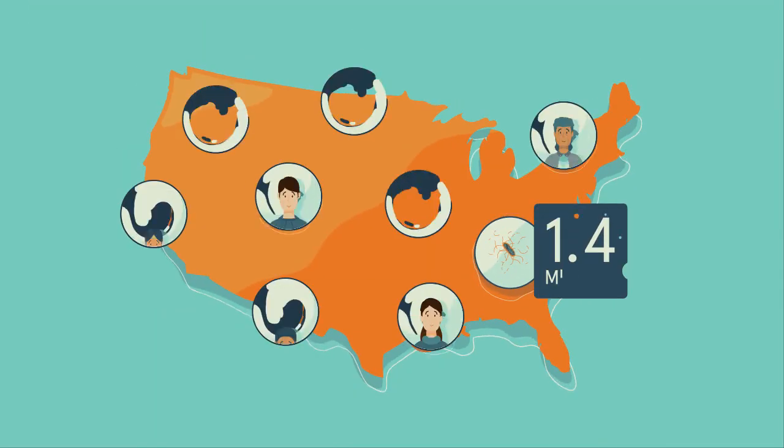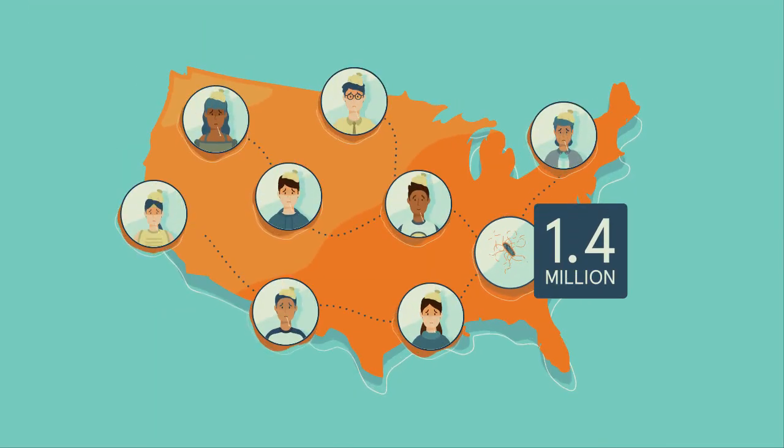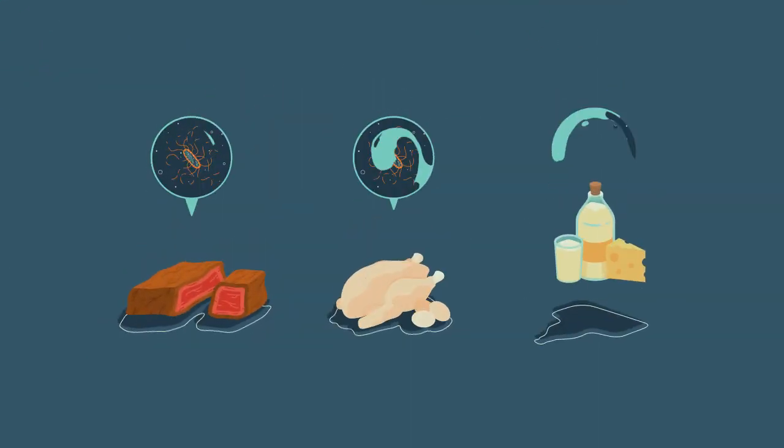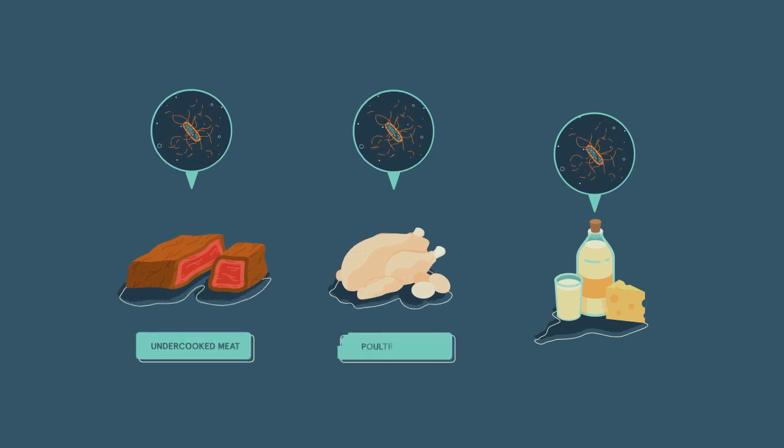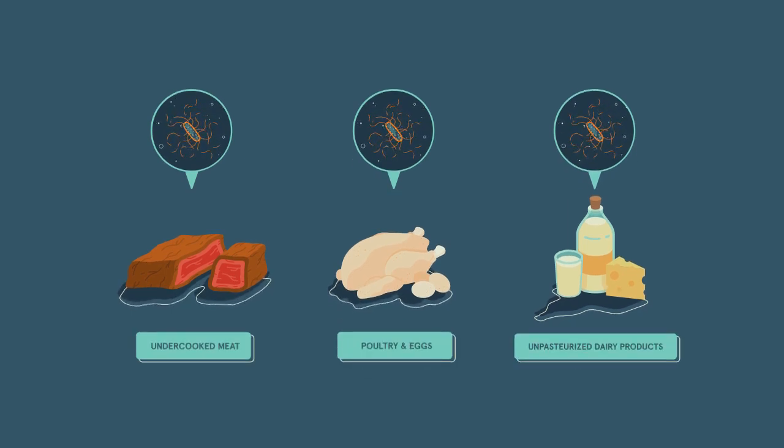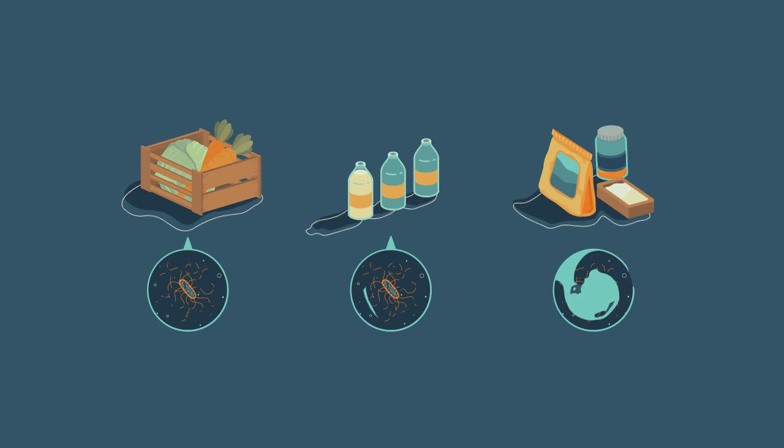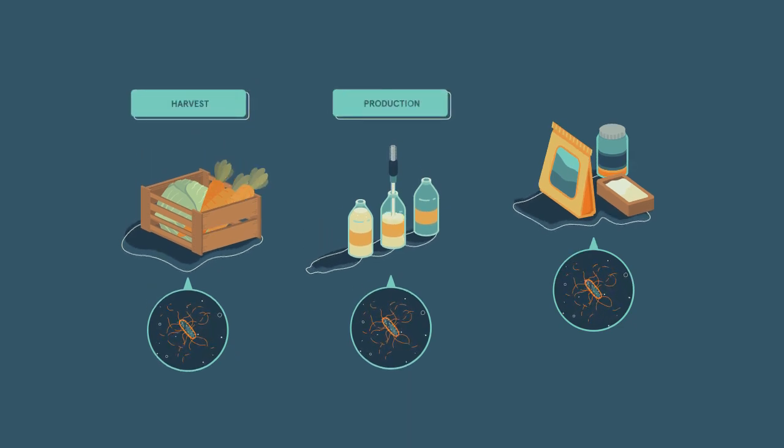Salmonella sickens 1.4 million people in the U.S. yearly. Salmonella can be found in undercooked meat, poultry, eggs, or unpasteurized dairy products, and foods contaminated during harvest, production, or packaging.